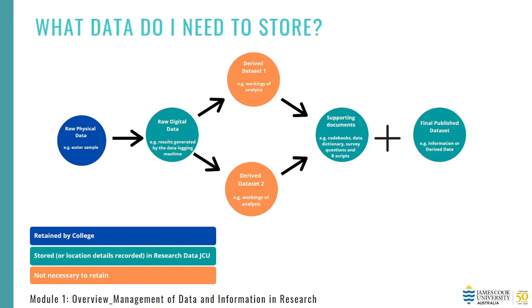So what research data and information does need to be stored and where? Using the water creek example from the IP section, you'll need to apply this understanding to your specific research areas. If you take the raw physical data — in this case the physical water sample — this is not required to be stored in the Research Data JCU platform, but it may be required to be kept in your college. I encourage you to check this with the lead investigator or your primary advisor.